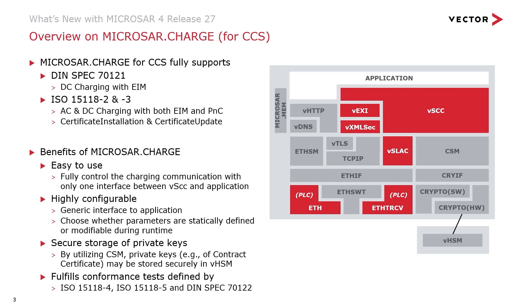Now I want to focus your attention on the figure on the right side. You can see Microsar Charge in conjunction with its main dependencies, Microsar Ethernet and Microsar Crypto. Before Microsar 4 release 27, Microsar Charge was using the VTLS module to establish a TLS connection and the NVM to store certificates. Private keys were already securely stored in the VHSM using the CSM. As you will see on the next slide, this architecture has changed with Microsar 4 release 27.